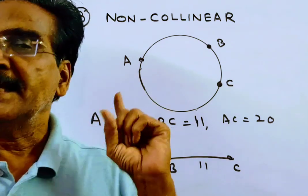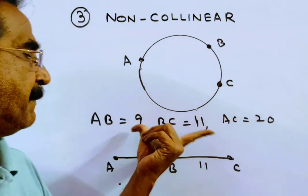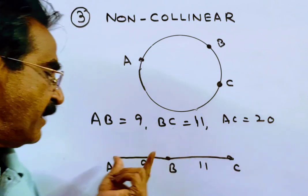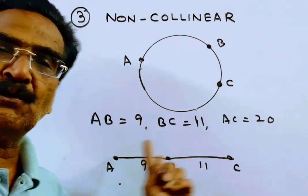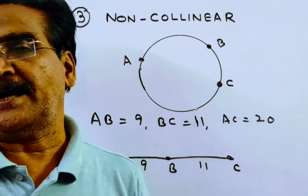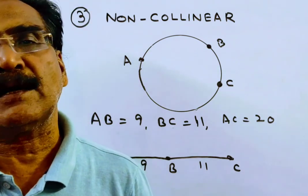In the present problem, AB = 9, BC = 11, AC = 20. This implies AB + BC = AC. Since AB + BC = AC, the points A, B, C are collinear. So through these collinear points, we cannot draw any circle.